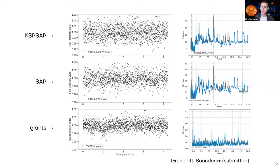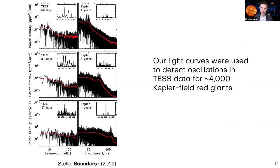Here's an example of one of the transits for a target in our sample that was removed by another pipeline. To show how you actually search for these planets, you use a box least squares periodogram, which looks for periodic box-shaped dips in your light curve. I show two different light curves on top with ours on the bottom — you can see really tightly resolved period spikes detected in the Giants light curve that are lower signal-to-noise and harder to detect. Our light curves were also useful in preserving oscillations in red giant stars; a paper by Dennis Stello found oscillations in about 4,000 Kepler field red giants using our TESS light curves.